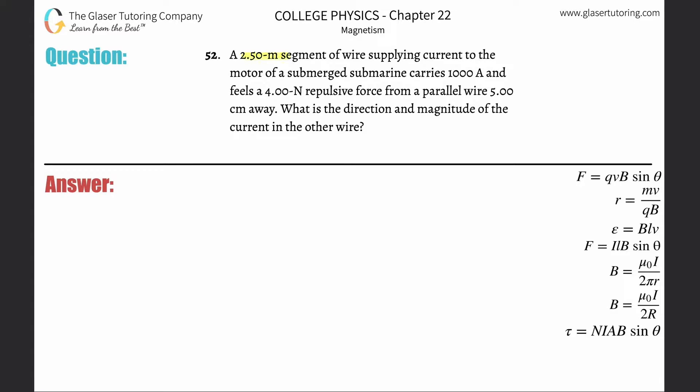Number 52: A 2.5 meter segment of wire supplying current to the motor of a submerged submarine carries 1000 amps and feels a 4 newton repulsive force from a parallel wire 5 centimeters away. What is the direction and magnitude of the current in the other wire?